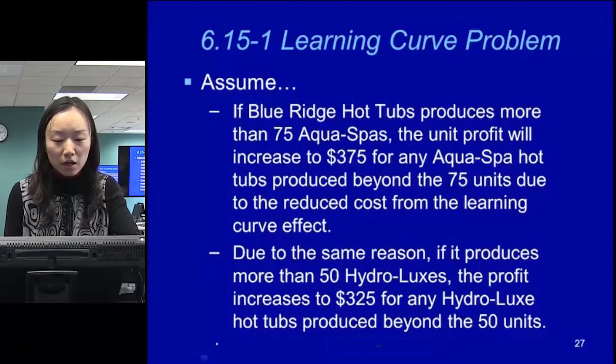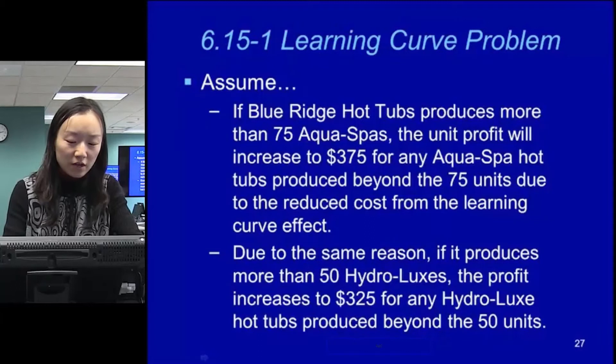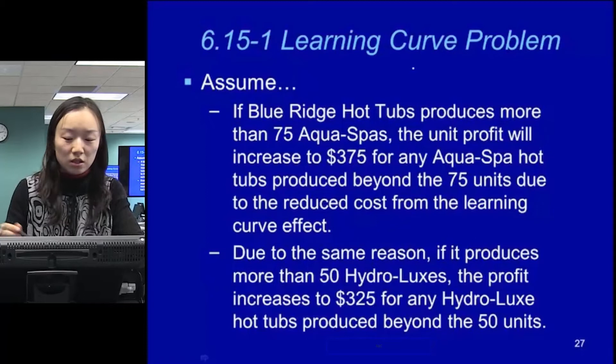But now we're adding things here. If this company produced more than 75 equal spots, because of the learning curve effect — many of you know that when you produce more, you get more efficient with labor economy of scale — the profit you can achieve will be increasing.